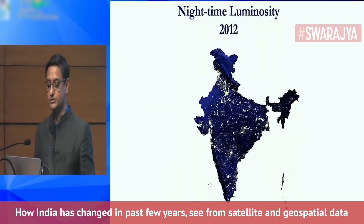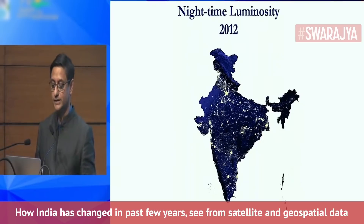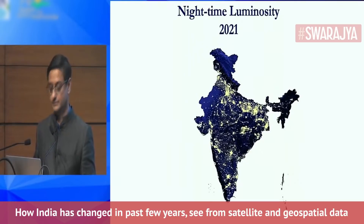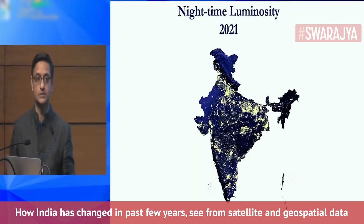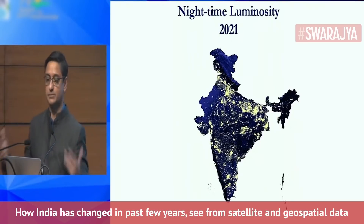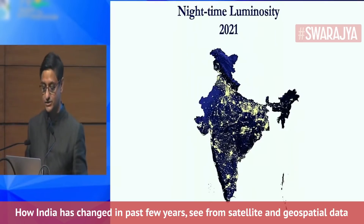This is nighttime luminosity of India in 2012 — a satellite photograph of India at nighttime. This is what it looked like in 2012, and this is what it looks like today. It gives you a very good sense of how electricity usage and supply has spread across the country, and it's quite interesting to see which parts of the country have seen dramatic increases.